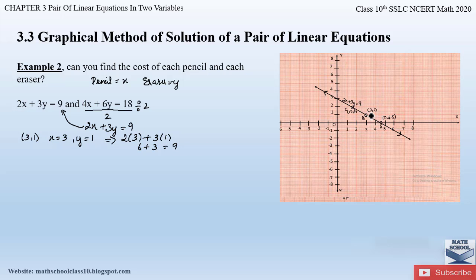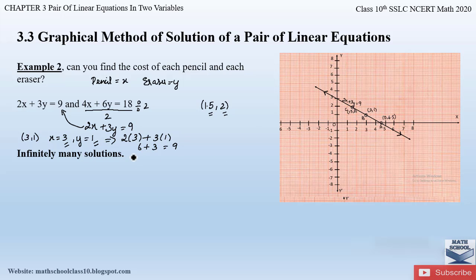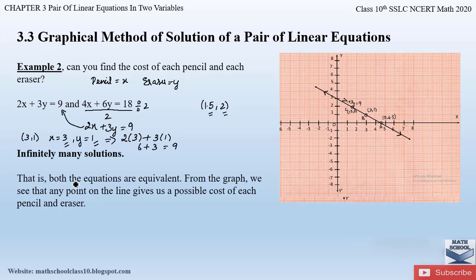Any point on the line satisfies the equation 2x plus 3y equals 9. Therefore the cost of a pencil can be 3 rupees and eraser 1 rupee, or if we take the point (1.5, 2), the pencil costs 1.5 rupees and eraser 2 rupees, and so on. When both lines of the two equations overlap, we obtain infinitely many solutions, meaning both equations are equivalent.